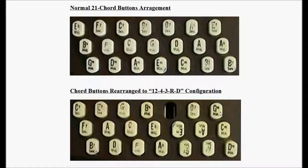The chord button for the diminished third of G minor, B flat minor, C sharp minor, and E minor aligns with the chord buttons to its left for C sharp, E, G, and B flat. Similarly, the chord button for C minor, E flat minor, F sharp minor, and A minor aligns with the buttons for F sharp, A, C, and E flat. The button for D minor, F minor, A flat minor, and B minor aligns with the buttons for B, D, F, and A flat.